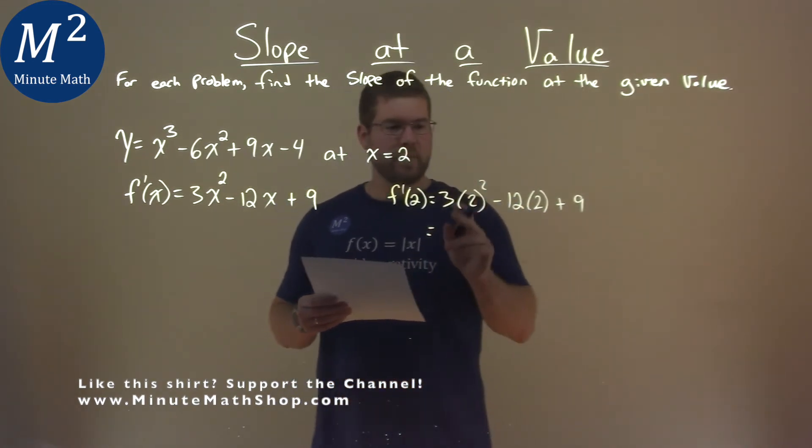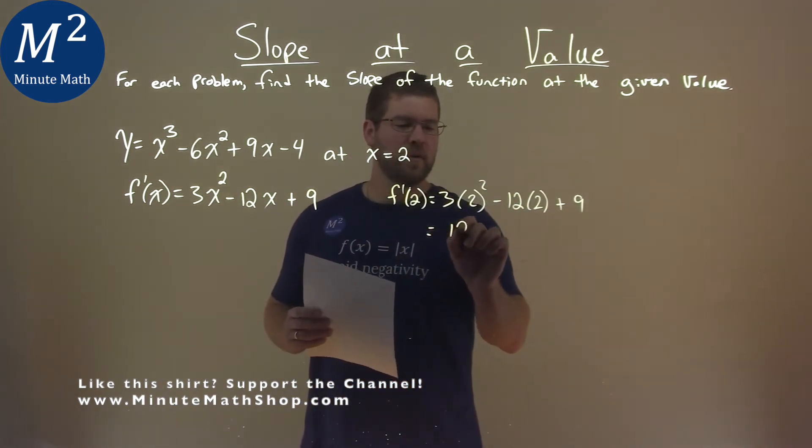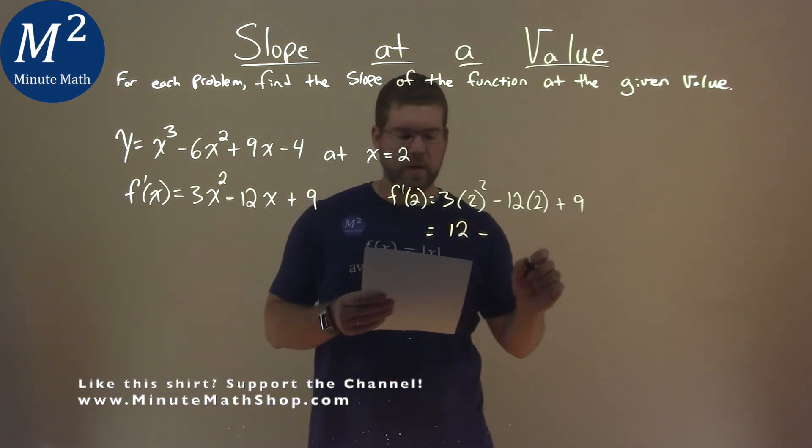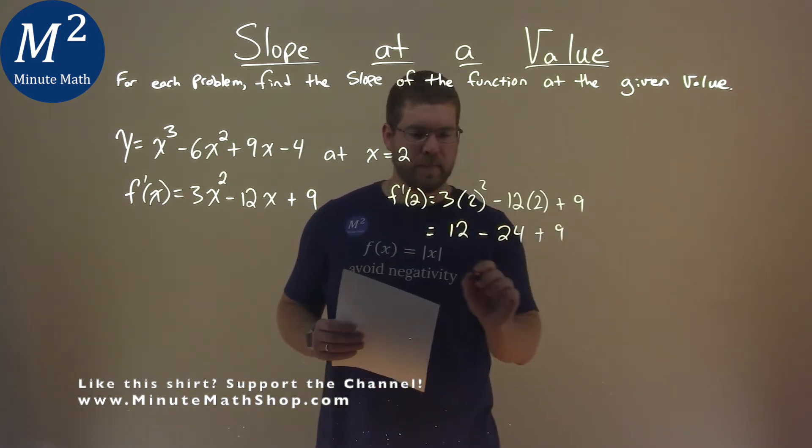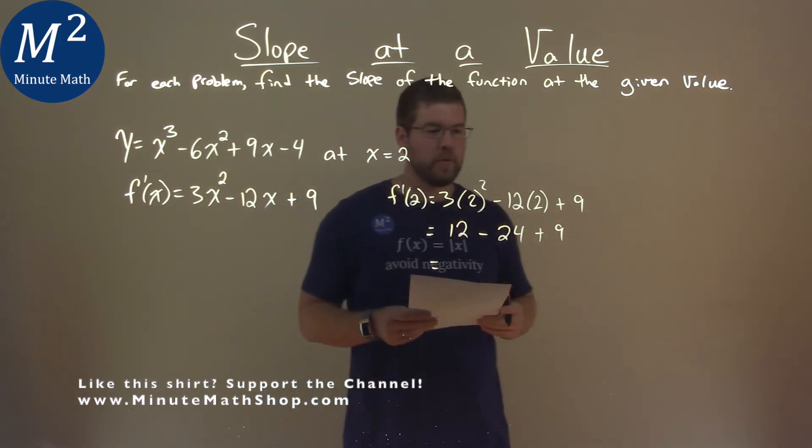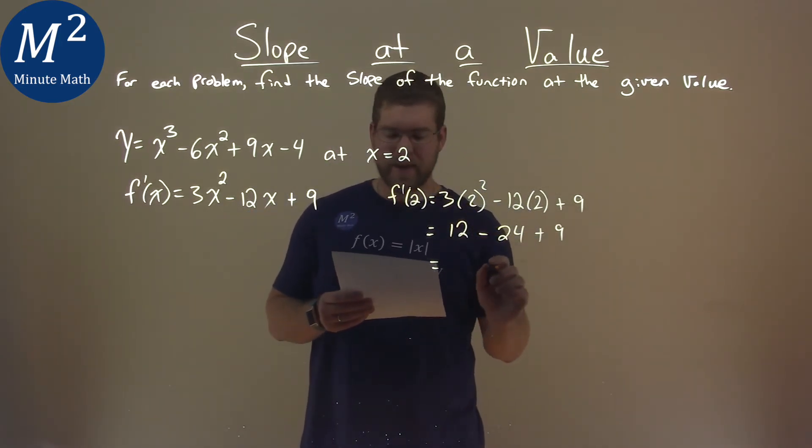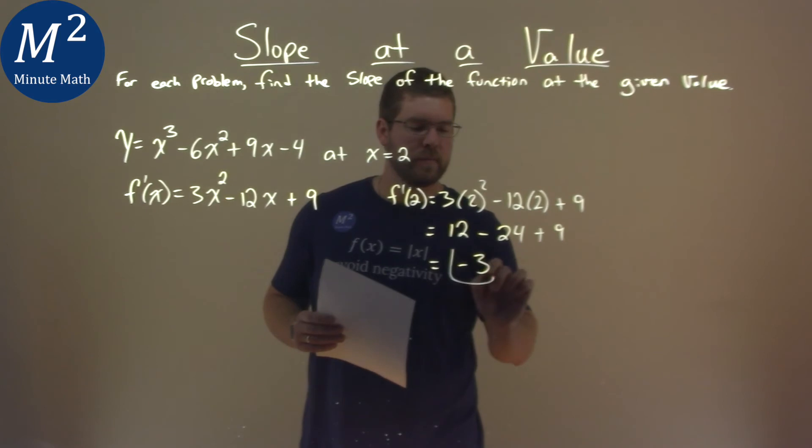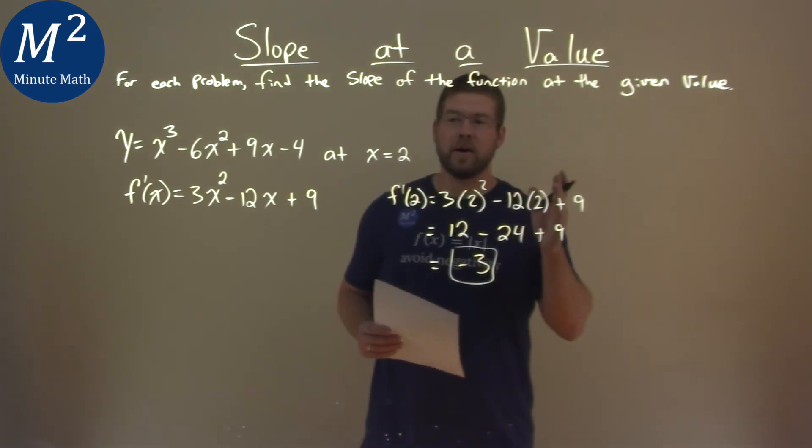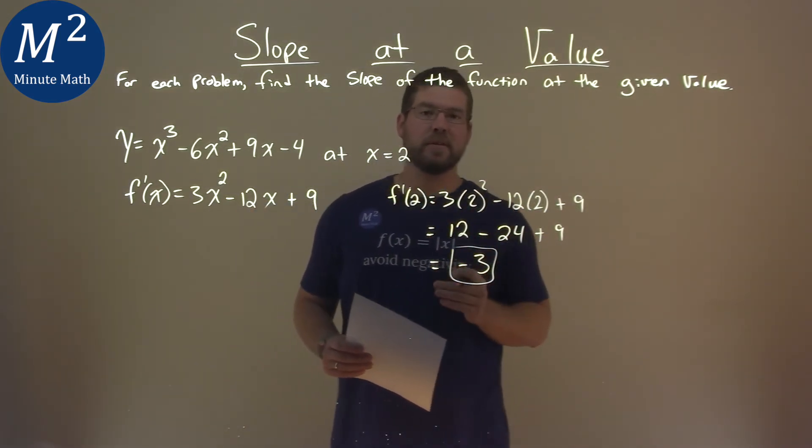Simplifying that out, 3 times 2 squared is 12, minus 24 (12 times 2), plus 9. 12 minus 24 plus 9 is negative 3. And so our slope here at our given value is negative 3.